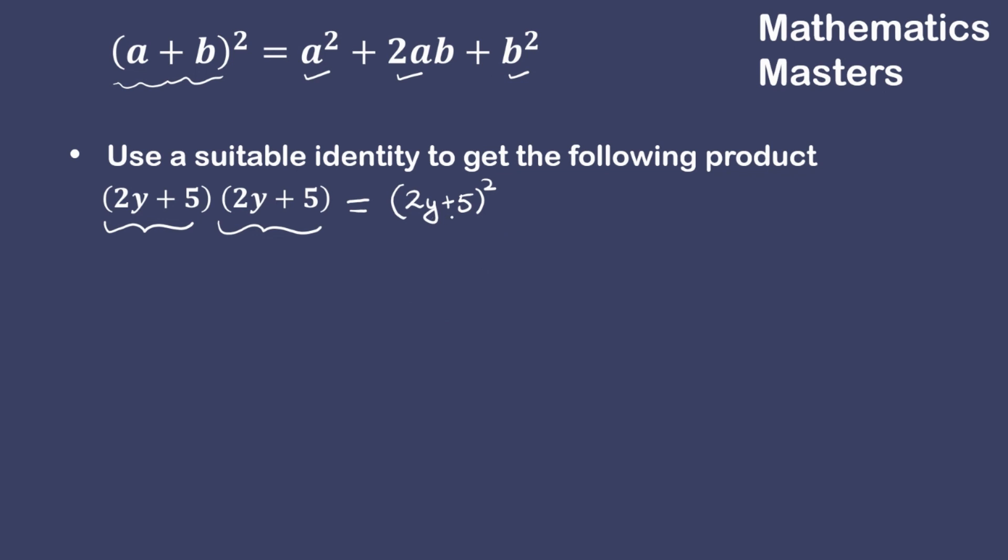Let us first compare the expression 2y plus 5 the whole square with the identity. On comparing, we know that the first term a is 2y and the second term b is the number 5.